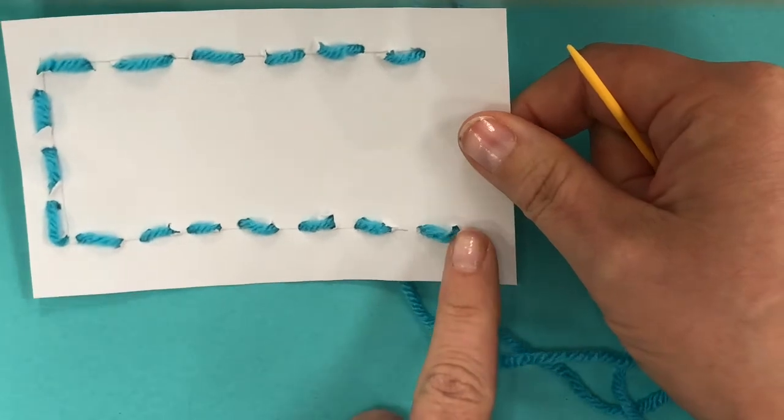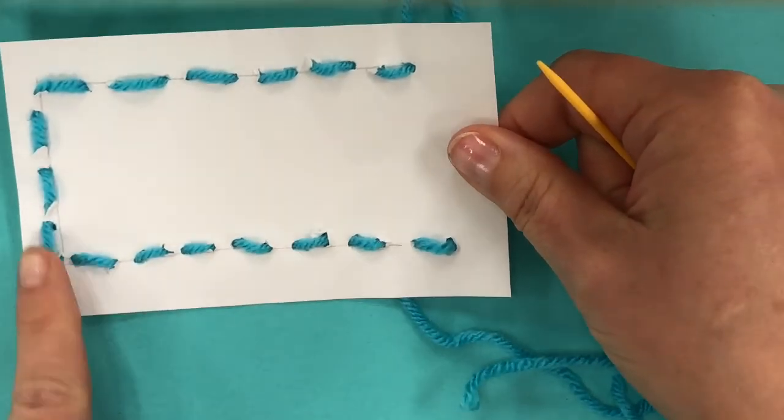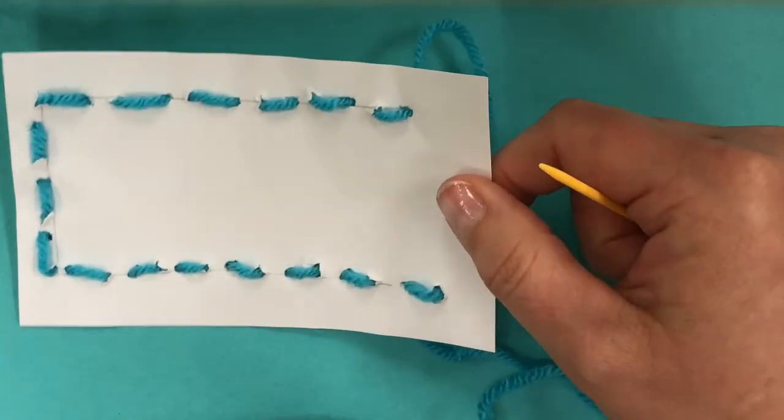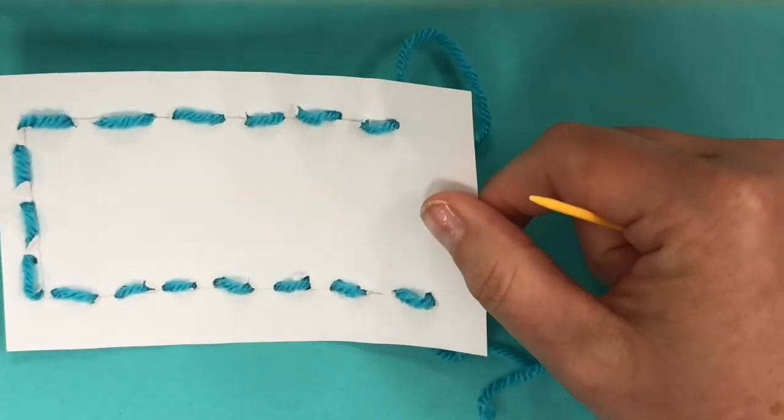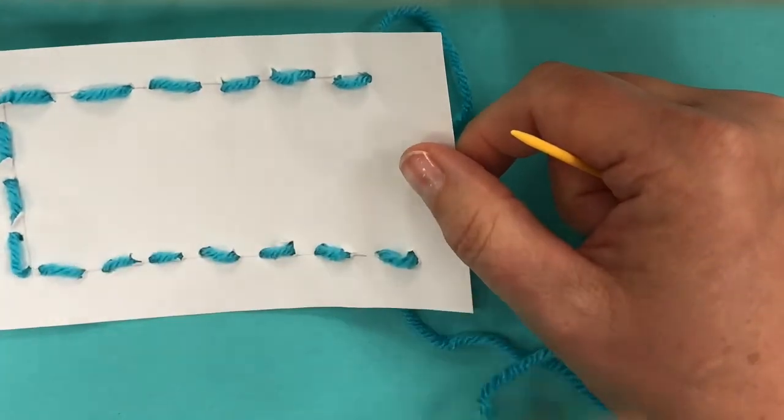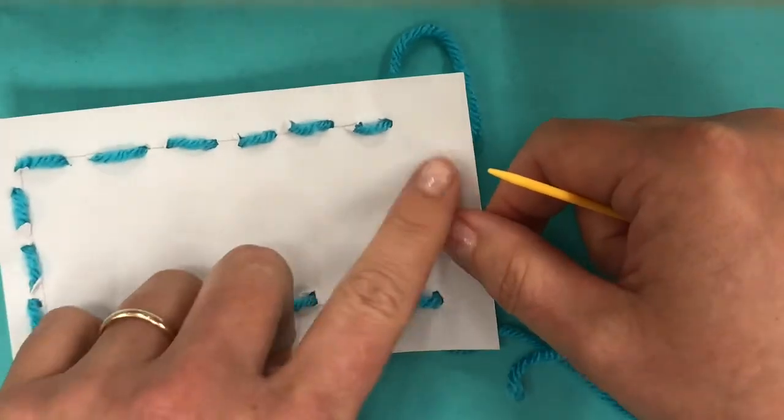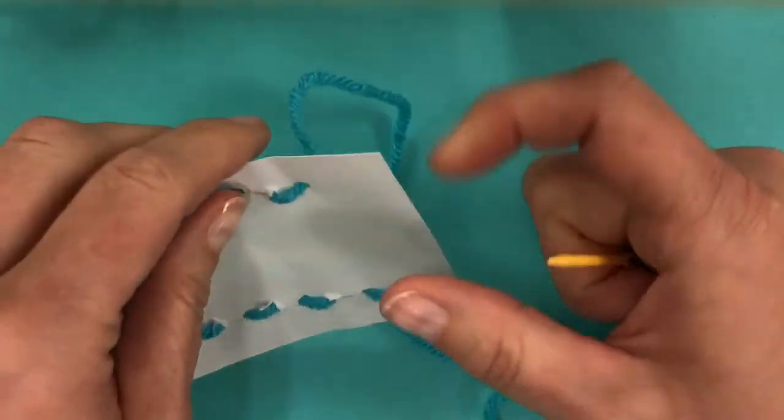So I have sewn a running stitch down my paper and up my paper and over and I'm done. When you finish a stitch and you're ready to switch off to something new, you'll need to tie a knot, but you don't want the knot to be on the front so I've ended on the back.